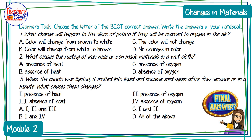Number three: when a candle was lighted, it melted into liquid and became solid again after a few seconds or a minute. What causes the changes? One — presence of heat; two — presence of oxygen; three — presence of heat; or four — absence of oxygen. Letter A: one, two, and three; B: one and four; C: one and two; or D: all of the above.